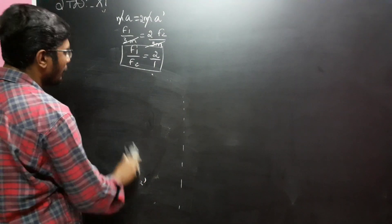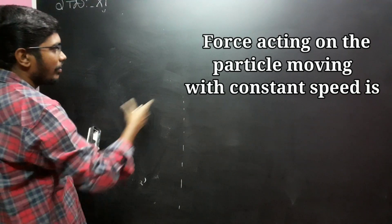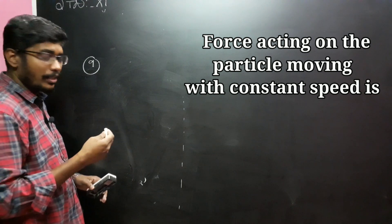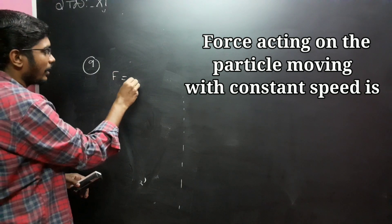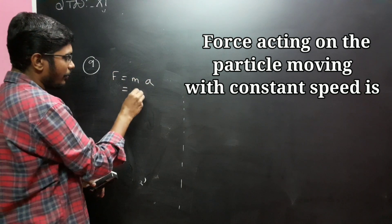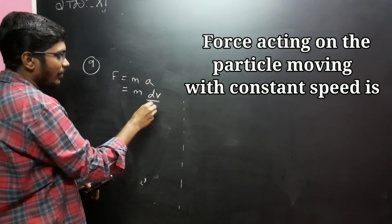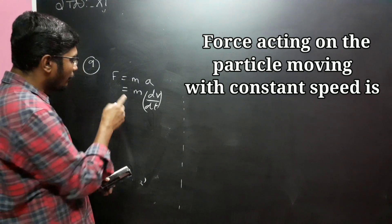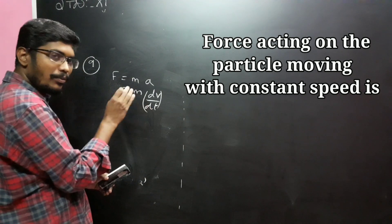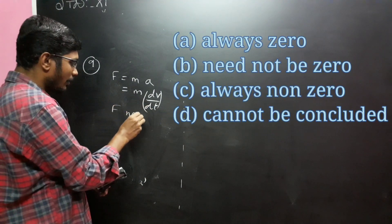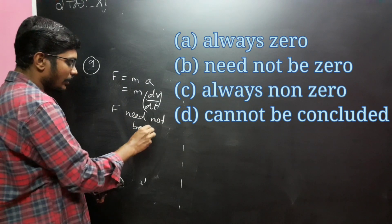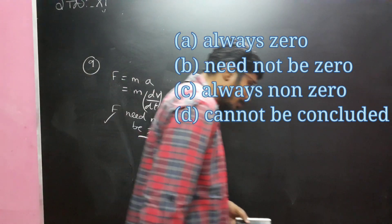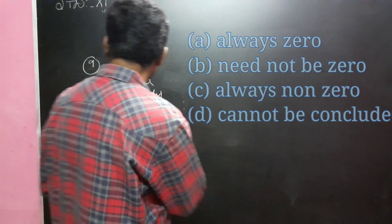Question number 9: One particle moves at constant speed. Force equals ma, which is the rate of change of velocity. If velocity is constant, force is zero. Speed being zero means force need not be zero. The answer is option B.